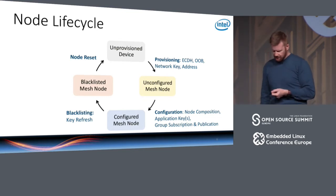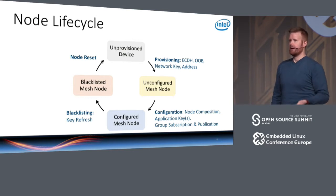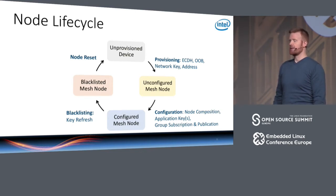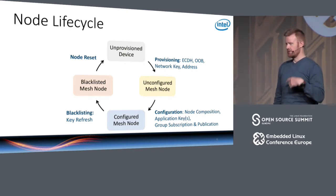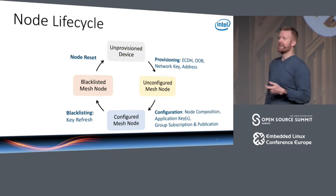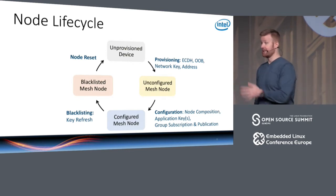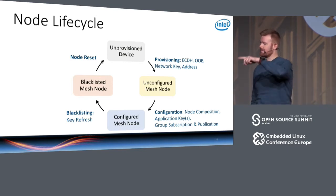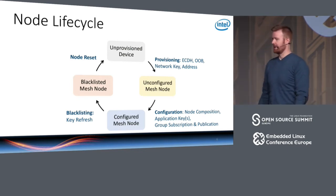Once configuration is complete using the device key, the node is a full mesh network node able to participate fully. Later, if you sell or lose a device, there's a feature called blacklisting which operates through key refresh. The provisioner can hand out new keys to nodes in the network using the pairwise device key, but selectively leave out specific nodes, essentially excluding them from the mesh network. The excluded node becomes unusable until it is reset, returning it to the unprovisioned state — a full cycle.